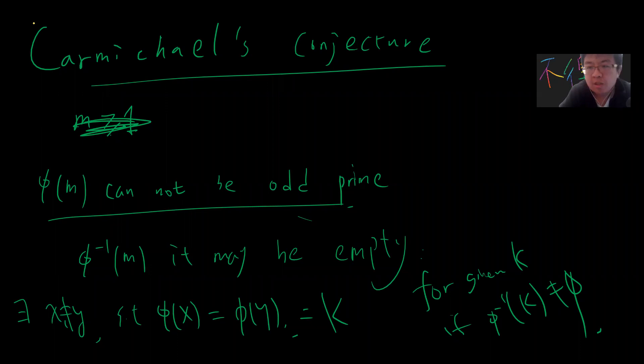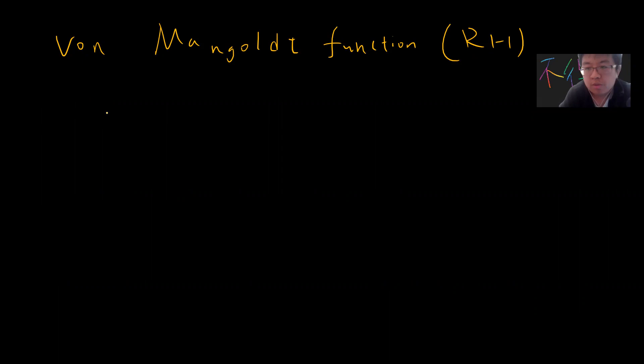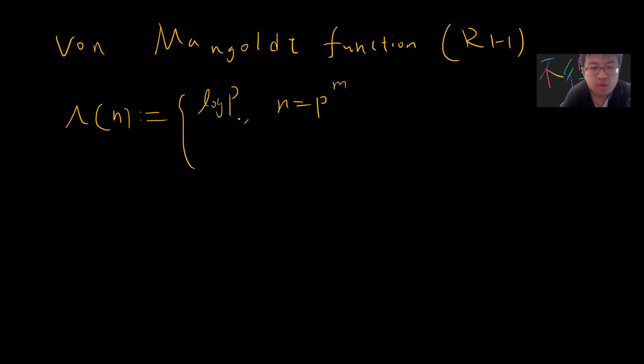The first new function is the Von Mangoldt function — this is really famous, and it's related to the Riemann hypothesis. The function Λ(n) is defined to be log p if n is a prime power p^k, and zero otherwise.